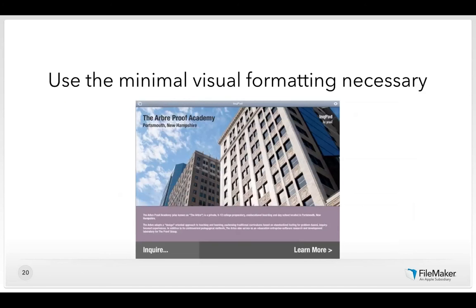Earlier in the lives of people using computers, it was necessary to use heavy visual formatting — gradients, layered patterns, and others — to communicate what was interactive because it was hard to see on screen. Now that we have retina screens and people are used to using computers and touch devices, it's not necessary to be that heavy-handed. You want to use the minimal visual formatting necessary. An example of that is this screenshot from Inkpad, designed by the Proof Group, where they've used just a little bit of formatting — subtle shading, ellipses, and a right-facing chevron — to indicate buttons and differentiate them from everything else.